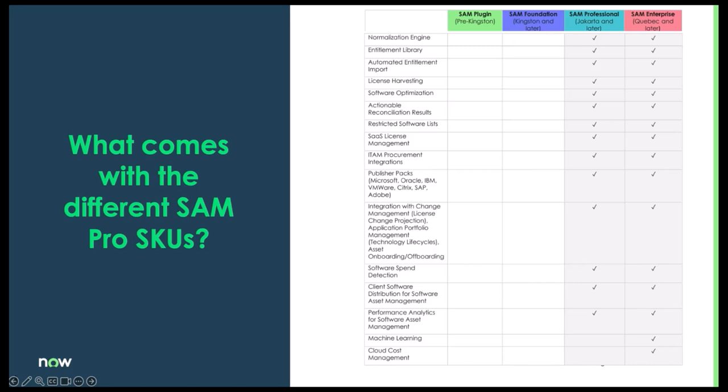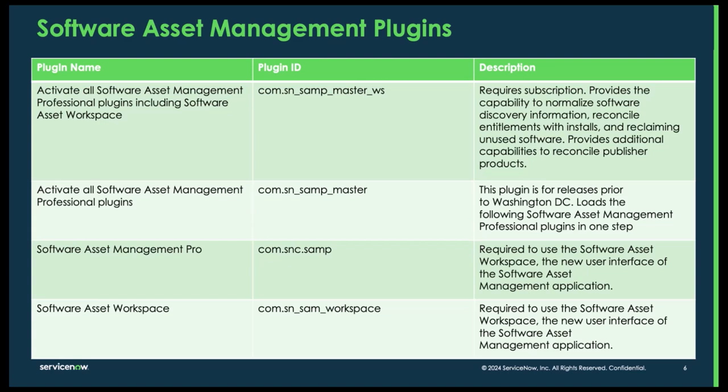Here are all the additional features and functionality that come with those two other products. Now let's take a look at some of the software asset management plugins and their components. The first one we want to address is the master plugin — a new plugin for the Washington release — which activates all the software asset management professional plugins including the software asset workspace. In Washington, the software asset workspace is required to use the software asset management application.